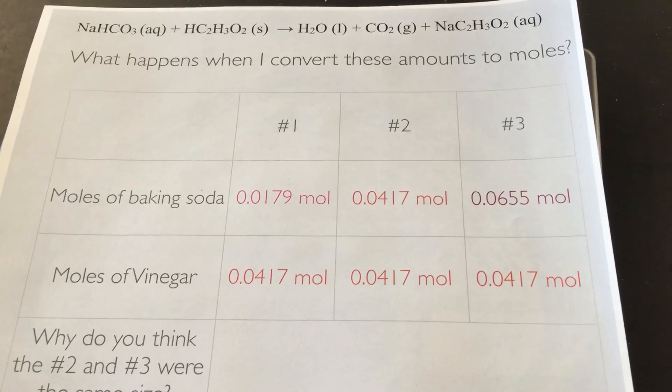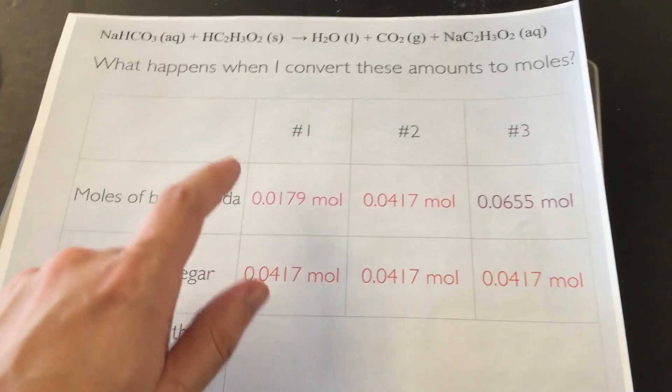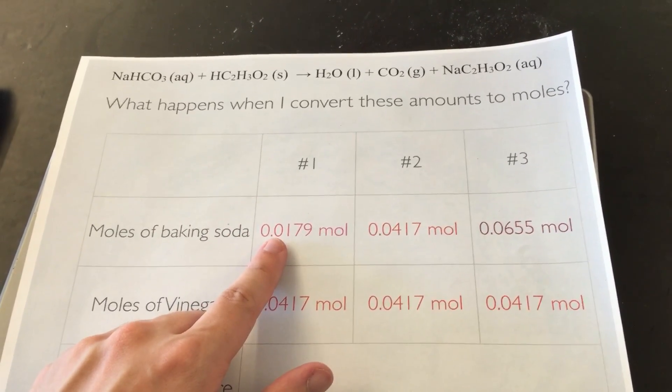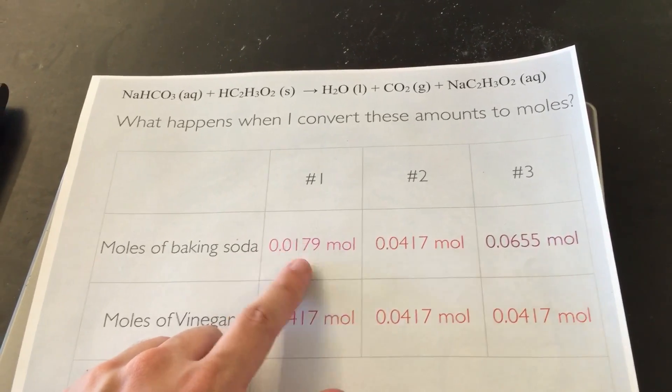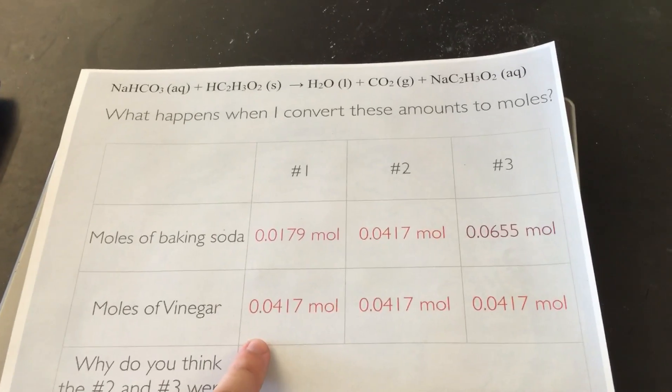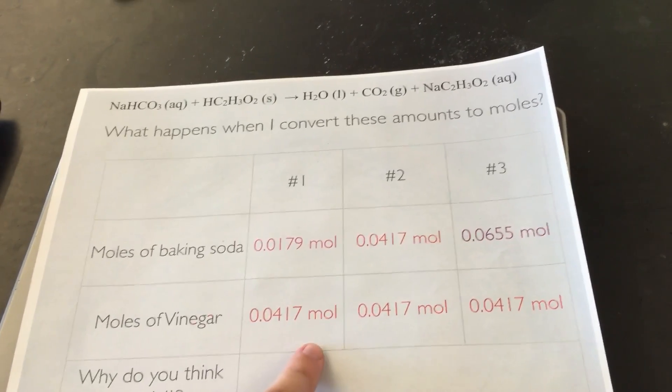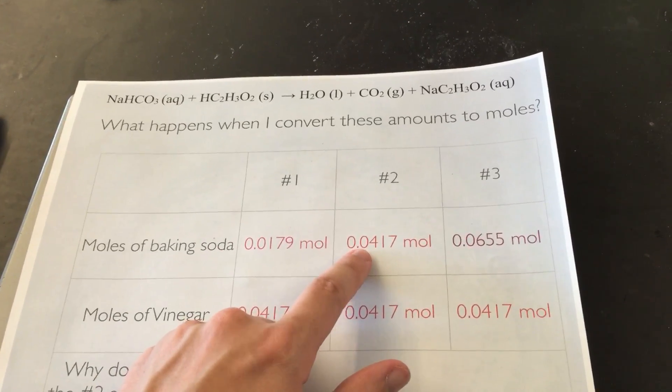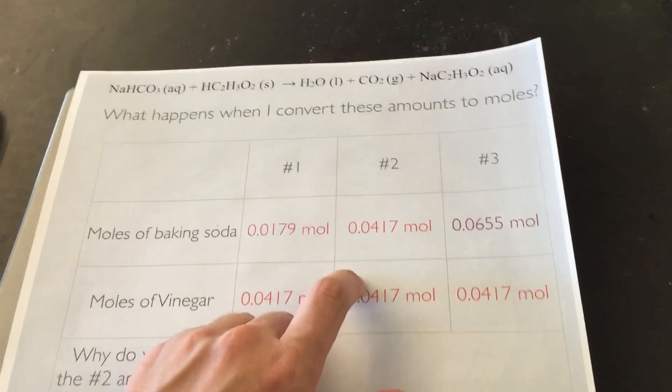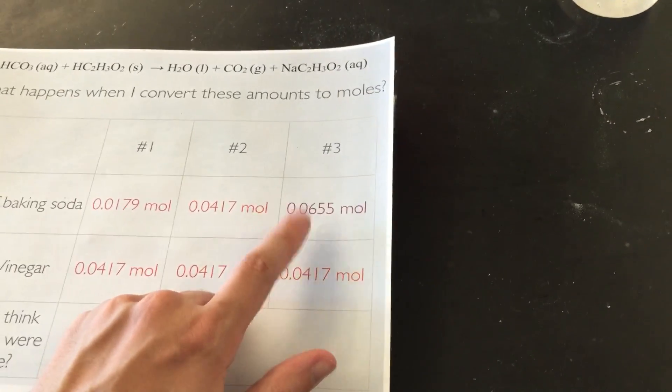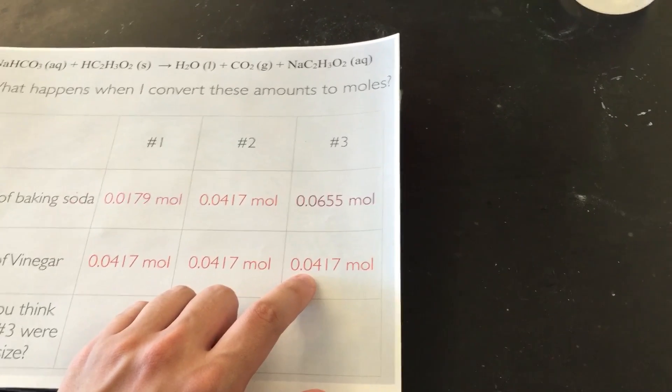So if we take a look at this, what happens when I convert these amounts to moles? When I convert the first flask's amount of baking soda, I get 0.0179 moles. Moles of the vinegar, because it's 5% vinegar in that solution, 0.0417 moles. In the second flask, I had the exact same amount of both. And in the third flask, I had more baking soda than I did vinegar.